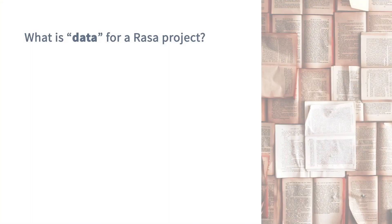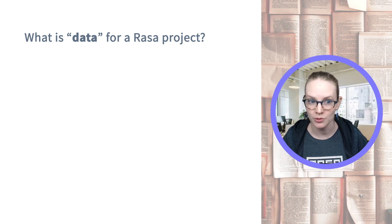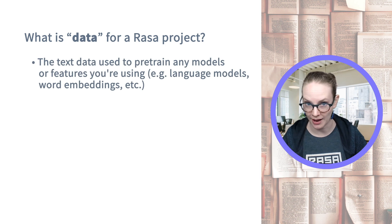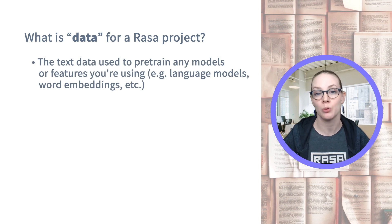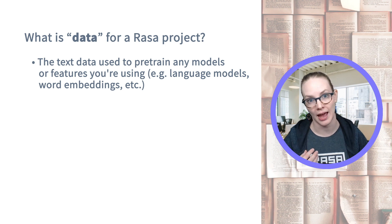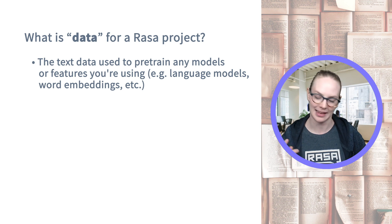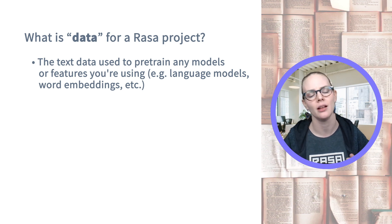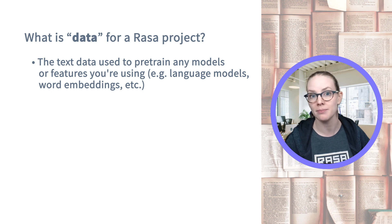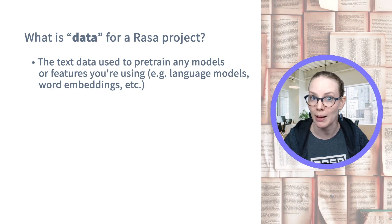So first off, what is data in the context of a RASA project? There are a couple of different types. The first you probably don't have to collect is any data used to create pre-trained models as part of your NLU pipeline — things like a language model, a word embedding, or a pre-trained Hugging Face model. Those will be trained on text data and you don't have to worry about it, but it will affect your final output.